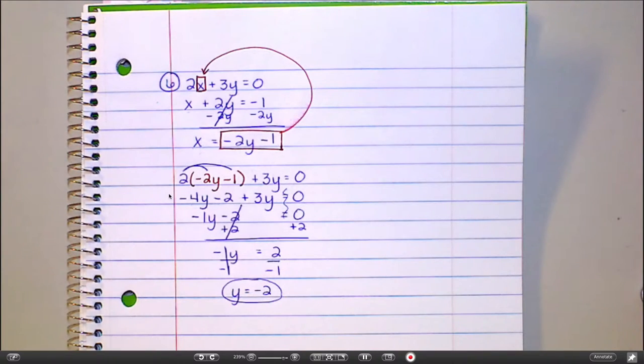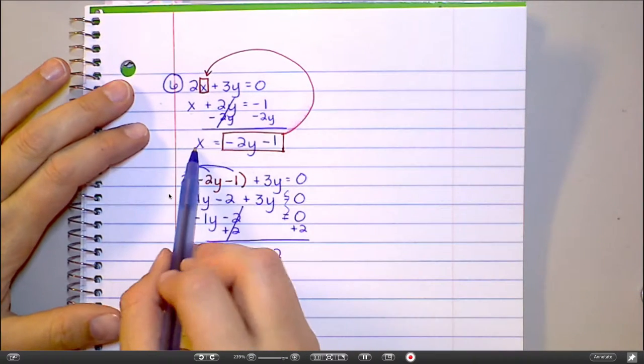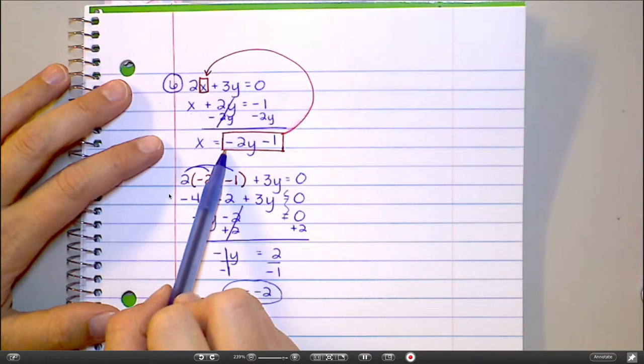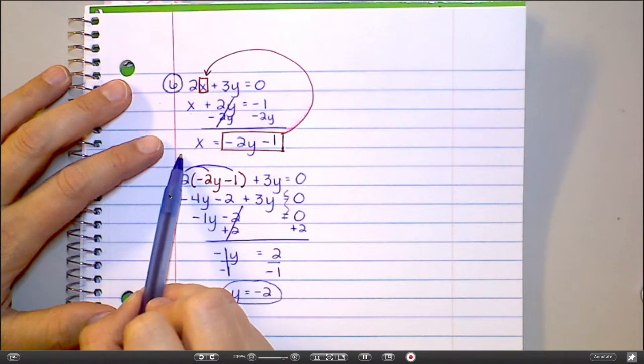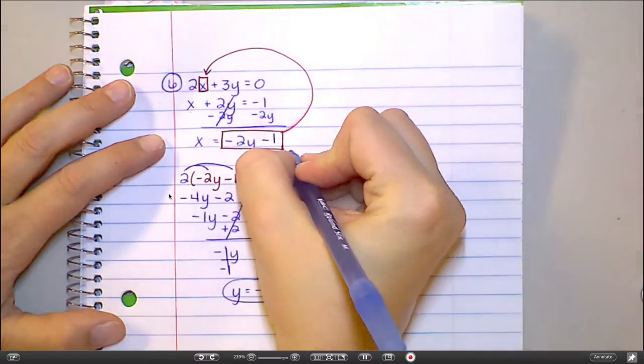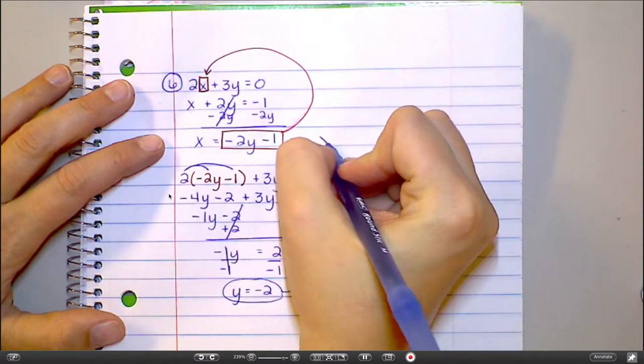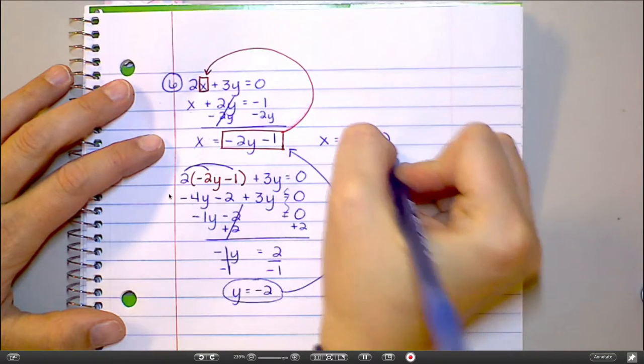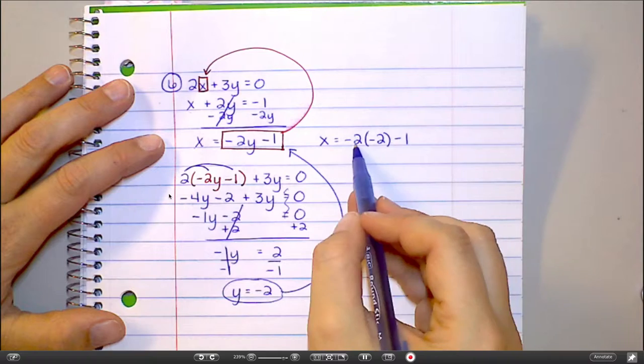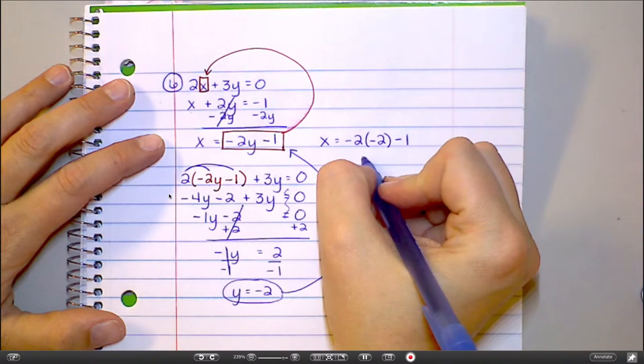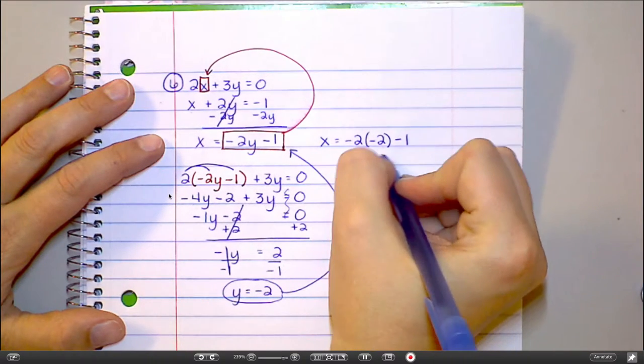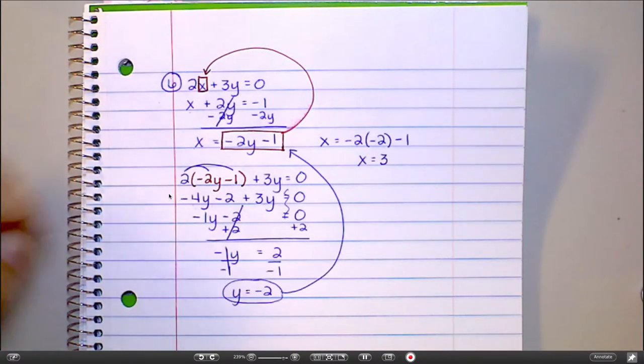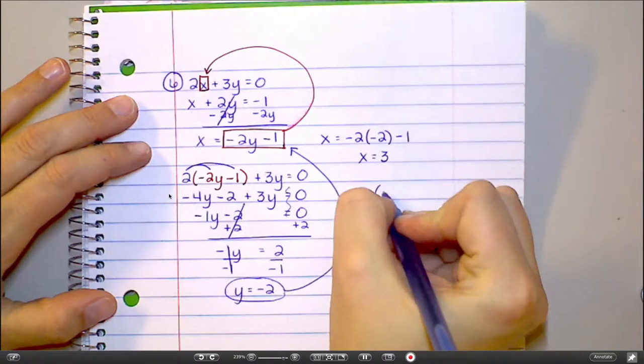That's half the battle. I've got my y value. Plug it in. I'm going to go back up here. You could plug it in there if you wanted to. I'm going to go here where I already solved for x. I've got what x is supposed to equal, so I'm going to plug that right in there, and then I'm going to have x equals negative 2, times negative 2 minus 1. That's going to be positive 4 minus 1, which is 3.